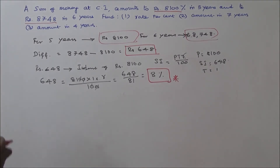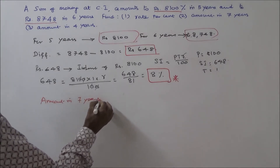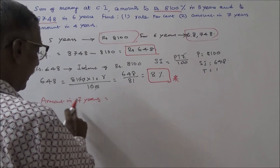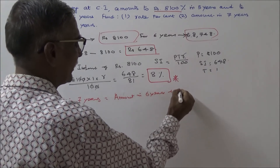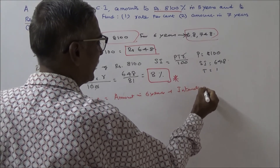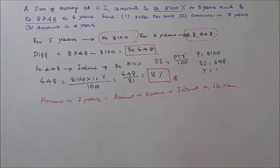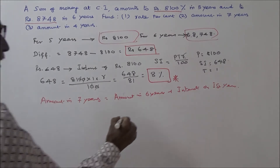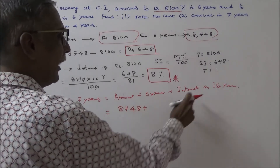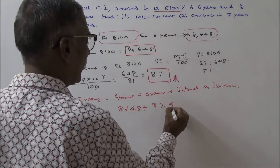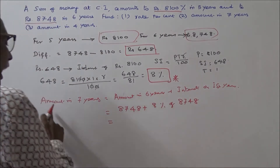The next question is: amount in 7 years. Amount in 7 years is equal to the amount in 6 years plus interest for one year. The amount in 6 years is given as Rs.8748, plus 8 percent of 8748 as interest. That will give the amount in 7 years.